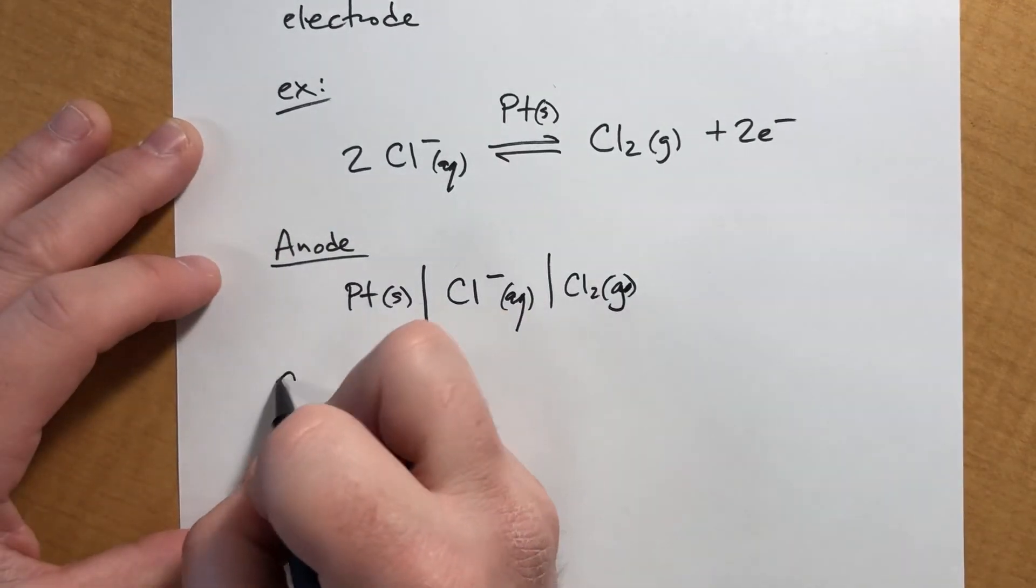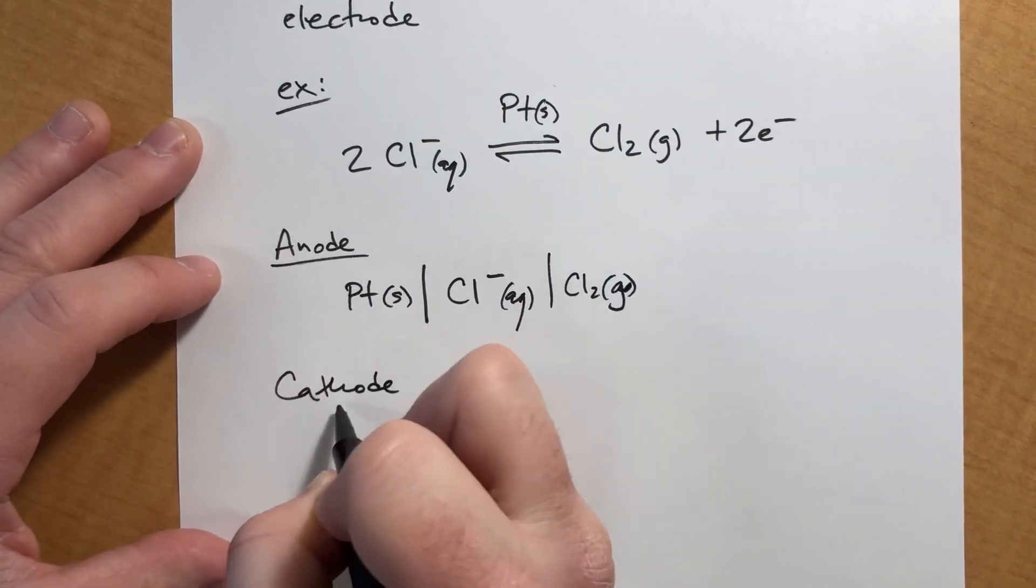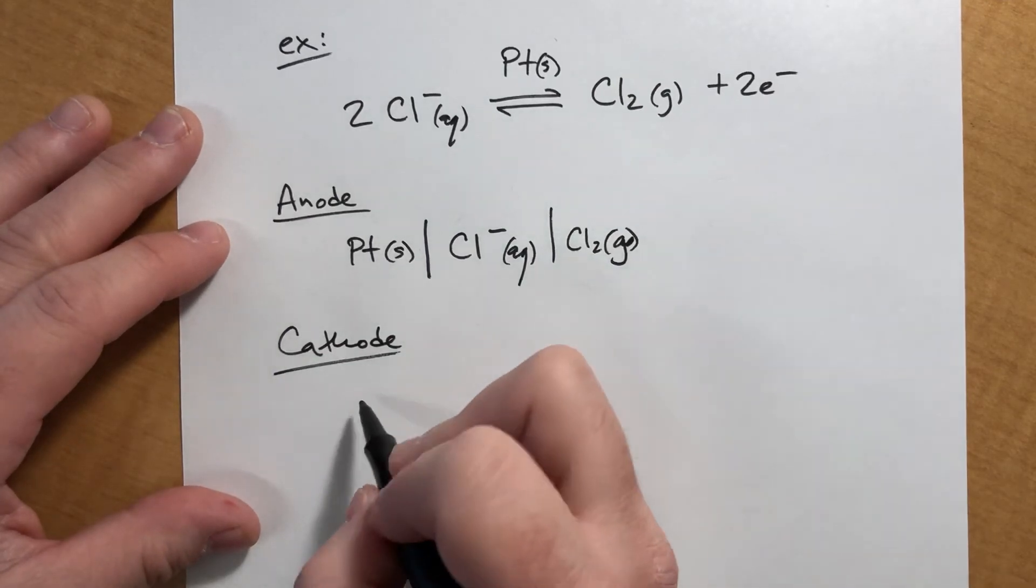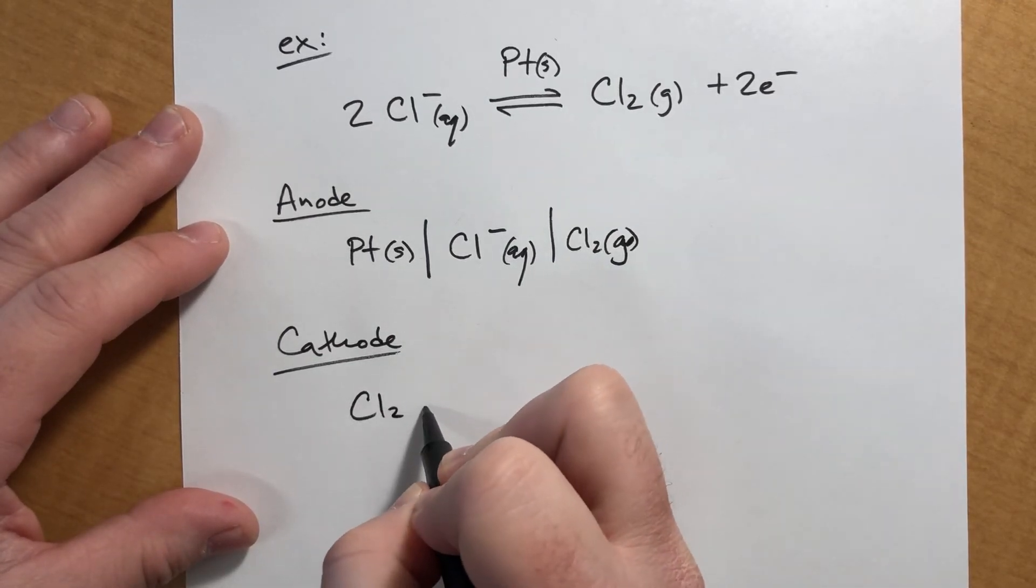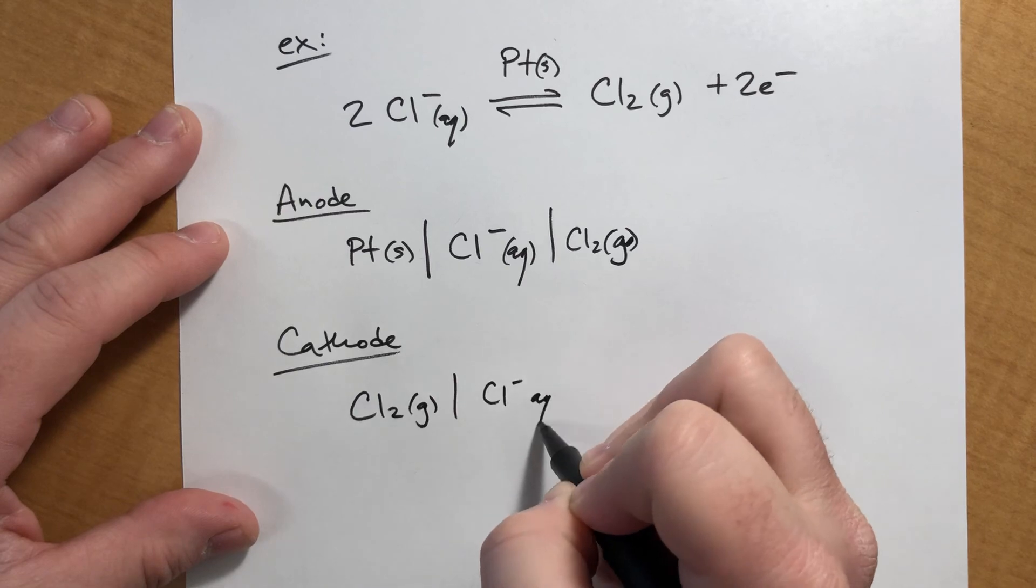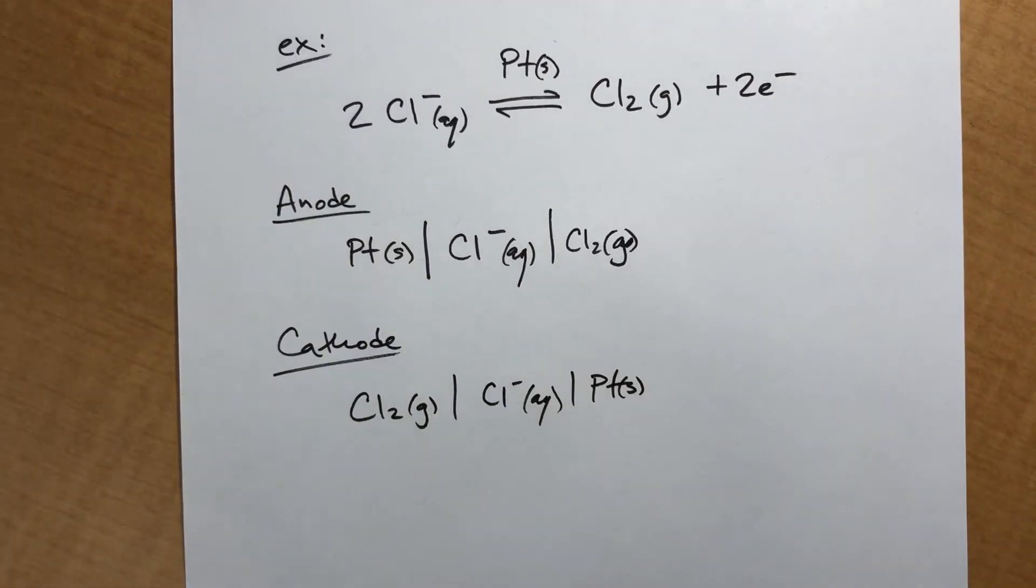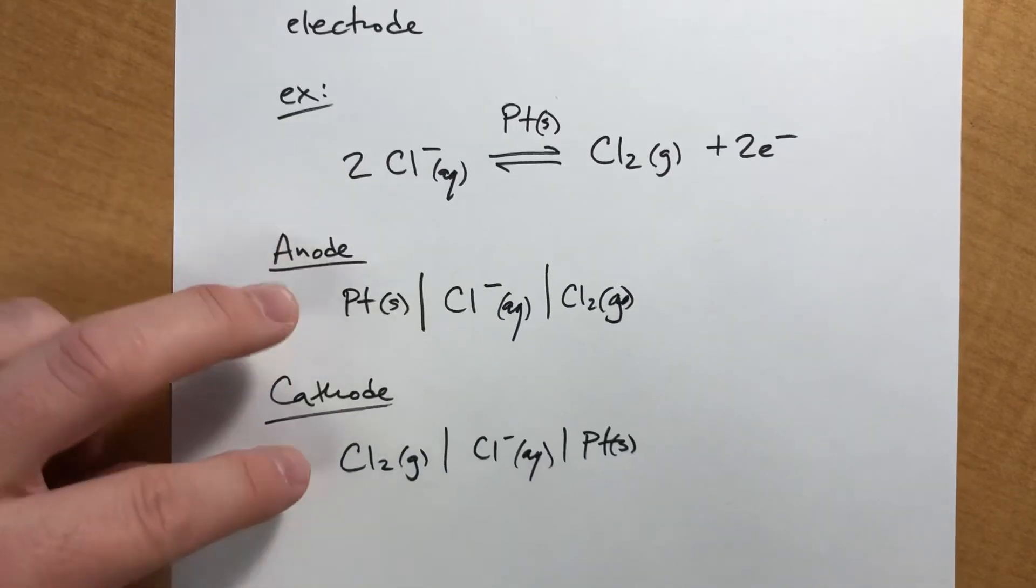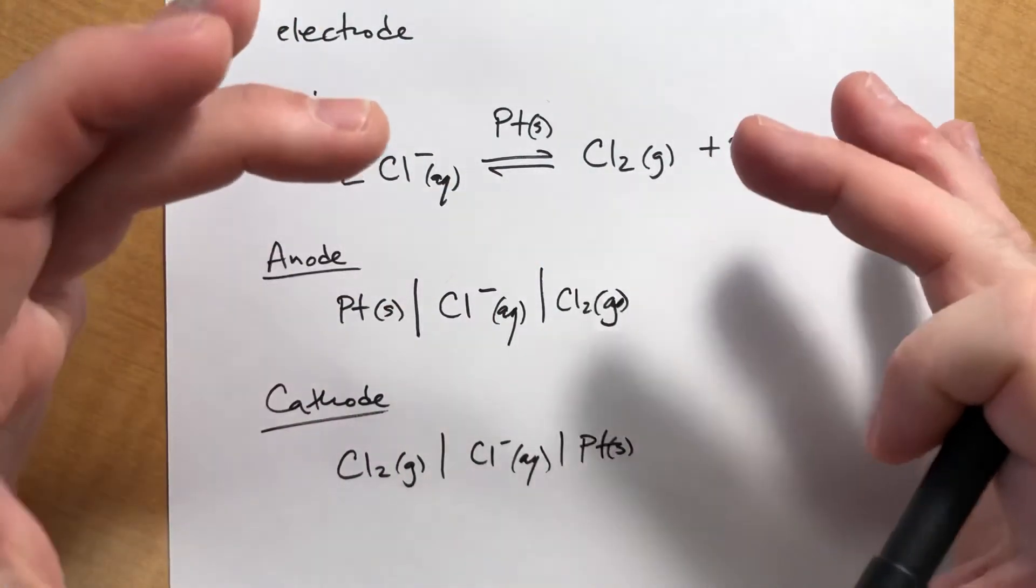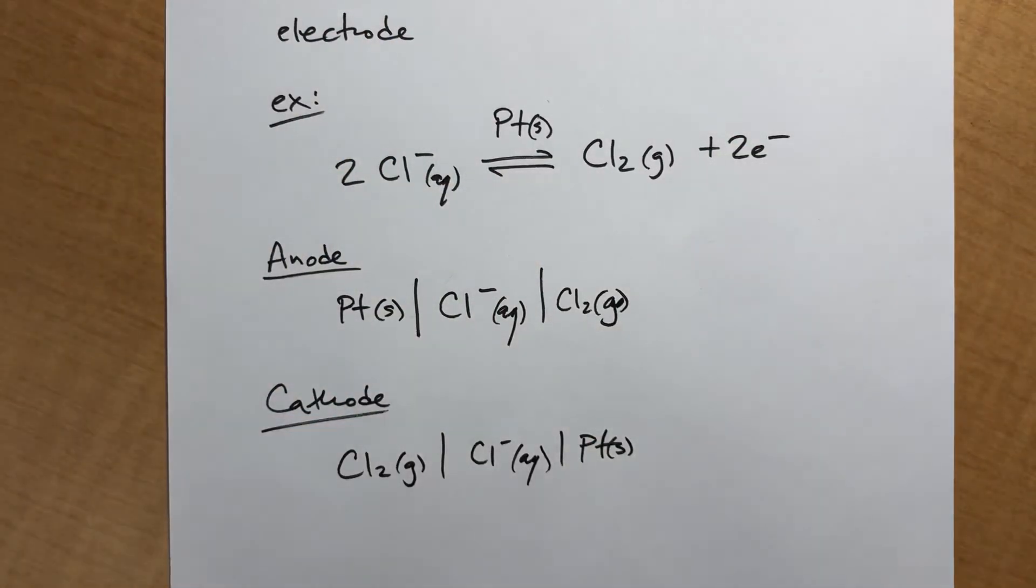If you wanted this as a cathode, you would literally just reverse everything. So, it would be Cl2 gas, Cl- aqueous, and platinum solid. So, not a huge deal, not overly complicated, but we are more likely to use this than we are to draw the entire voltaic cell with all the beakers and stuff.